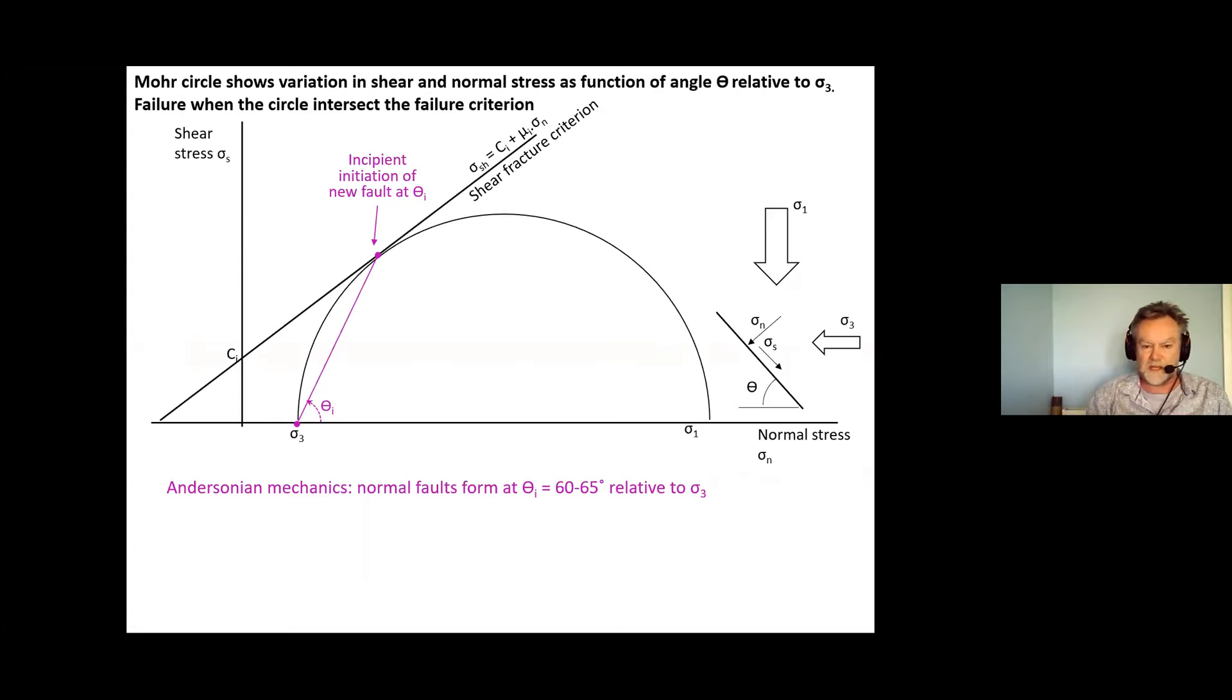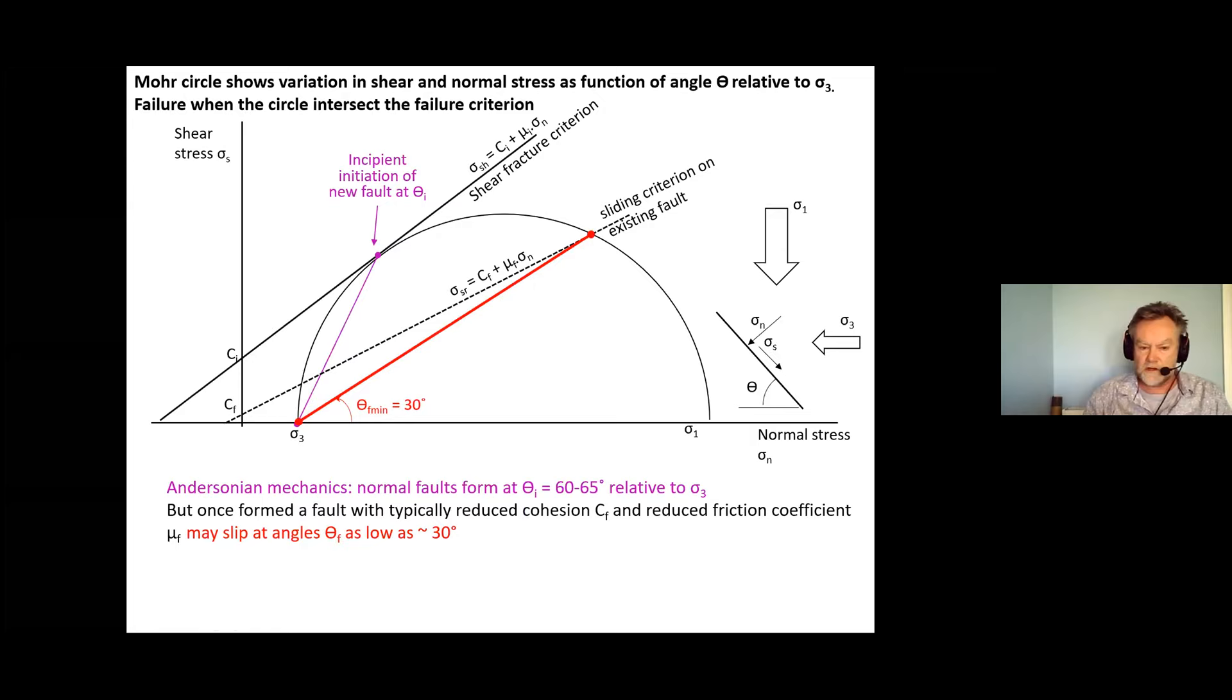This is just a standard Mohr circle with some sort of shear fracture criterion shown through here. This is the Mohr circle showing the distribution of shear and normal stress as a function of the orientation of the fault relative to sigma three. When we have a new fault it generally initiates here which is an angle of about 60 to 65 degrees relative to sigma three which in extension means we get a normal fault dipping at 60 to 65 degrees. All standard Andersonian mechanics. If we have an existing fault we can draw again from sigma three to get the minimum possible slip on that fault and this is all old hat, we get a fault active to maybe as low as 30 degrees.